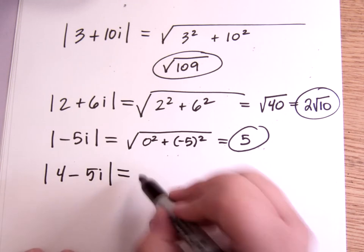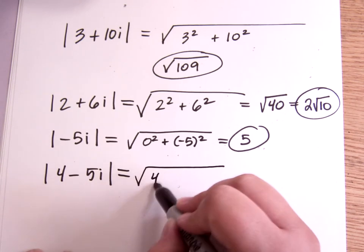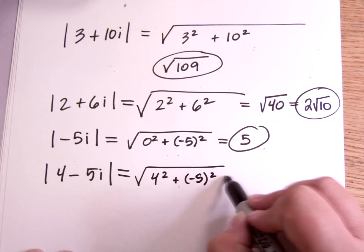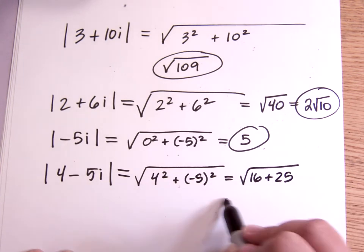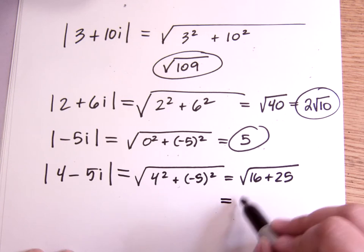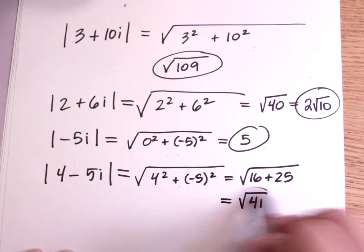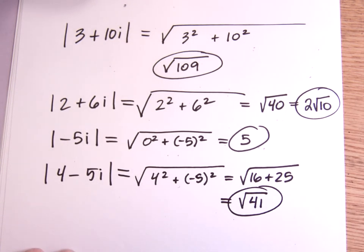Okay, and this one would be 4 squared plus negative 5 squared. So that's 16 plus 25, which is square root of 51, square root of 41, sorry. And that would be it. Okay, so that is graphing on the complex plane and absolute value of a complex number.